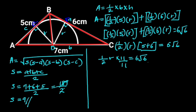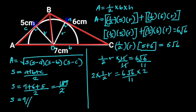Dividing both sides by 11 gives us ½ × R equals 6√6 over 11. Next, multiplying both sides by 2, since 2 divides 2 and 6 times 2 is 12, we are left with R equals 12√6 over 11.